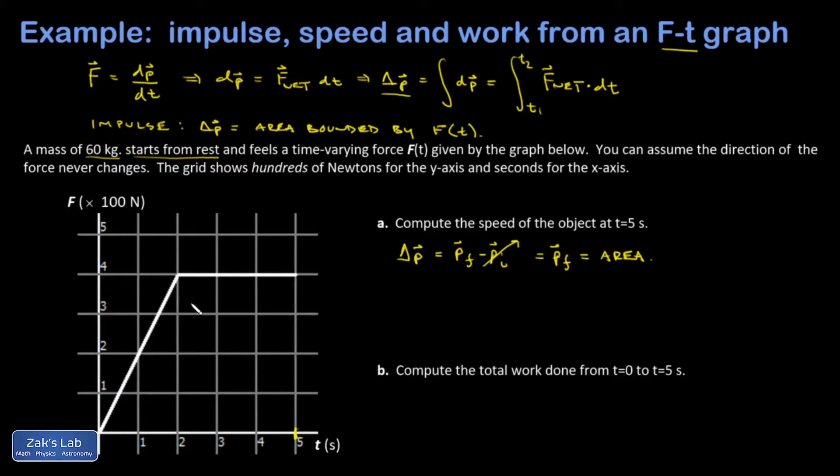So this is three times four, that's 12. And then this one is one half times two times four, which is an additional four. So we have 16 squares, but each square is 100 newtons high and one second wide. So my area is going to be 1600 newton-seconds.